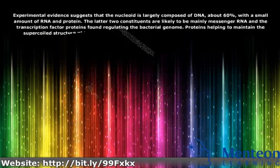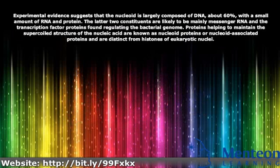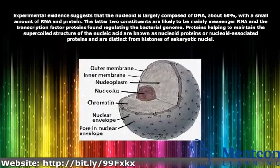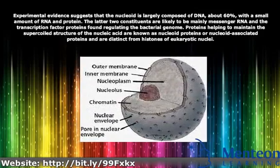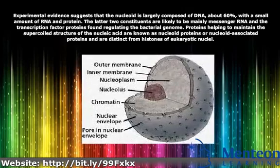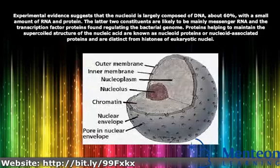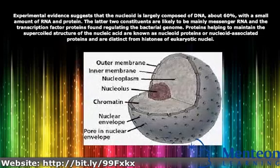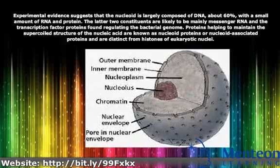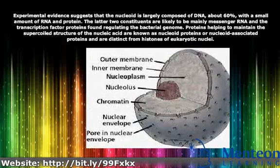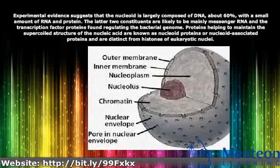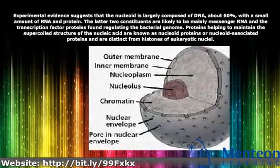Experimental evidence suggests that the nucleoid is largely composed of DNA, about 60%, with a small amount of RNA and protein. The latter two constituents are likely to be mainly messenger RNA and transcription factor proteins regulating the bacterial genome. Proteins helping to maintain the supercoiled structure of the nucleic acid are known as nucleoid proteins or nucleoid-associated proteins, and are distinct from histones of eukaryotic nuclei.